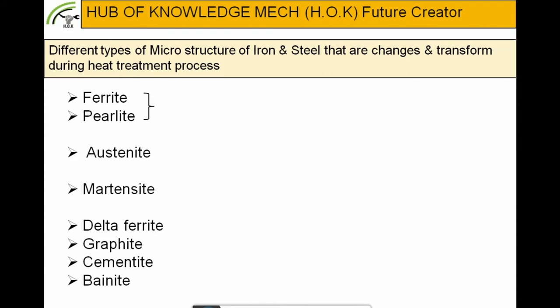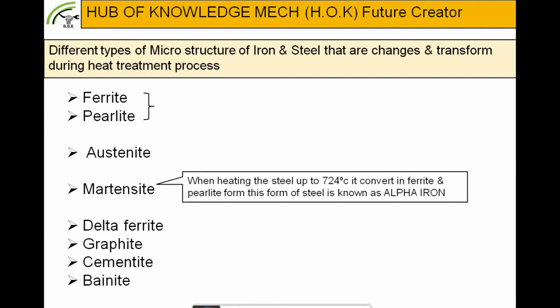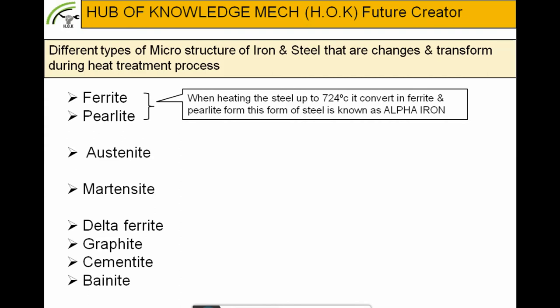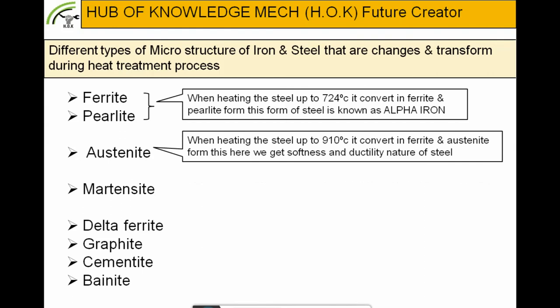Ferrite and pearlite: when heating steel up to 724°C, it converts to ferrite and pearlite form, also known as alpha iron. Austenite: when heating steel up to 910°C, it converts to ferrite and austenite form — here we get softness and ductility in the steel. If we need ductility and softness of steel parts, we must heat the material up to the austenite temperature.